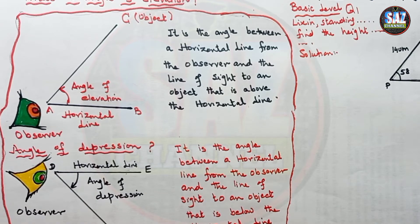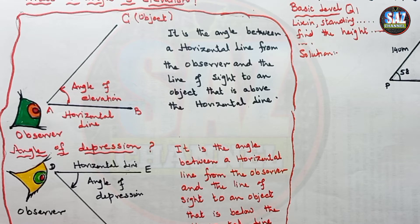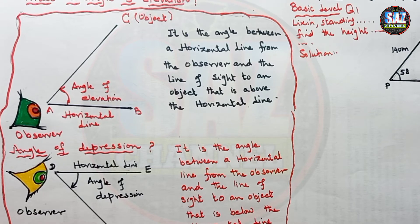Similarly, suppose that you are standing at the top of your building and you want to see some car coming in the street. In order to look at that car which is moving in the street when you are standing at the top of the building, in what formation do you have to keep the neck and the position of your eye? These two points have to be really clear in order to understand the angle of elevation and depression.